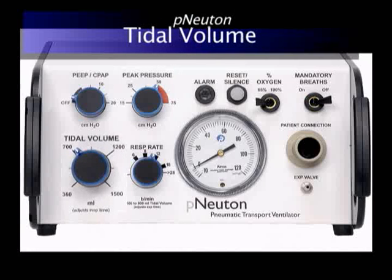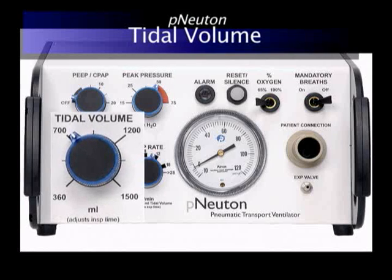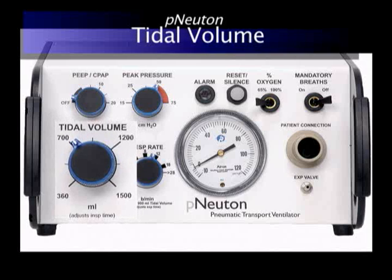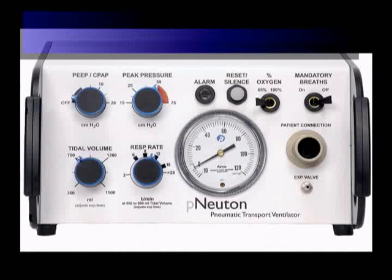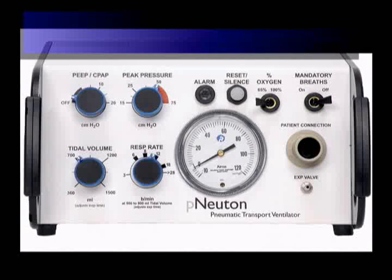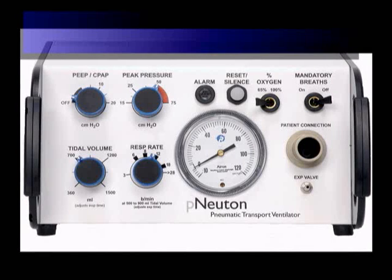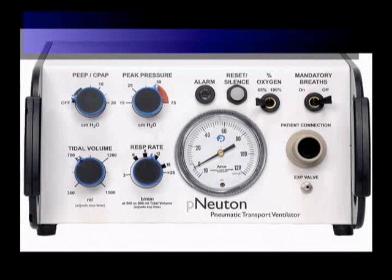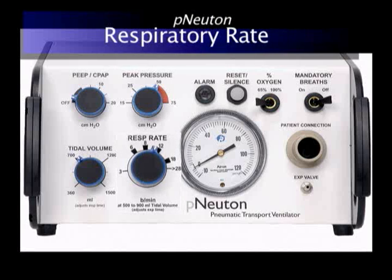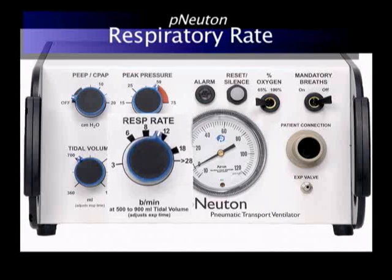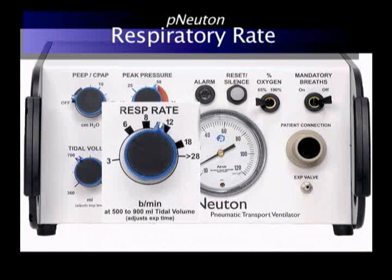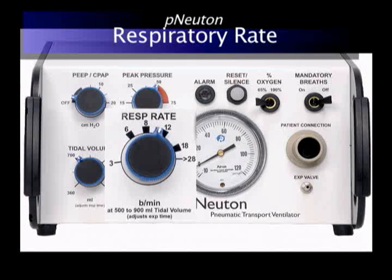Here you see the tidal volume control. It has a range of 360 to 1500 mLs for pediatric and adult patient needs. The Newton uses a preset flow at 36 liters per minute. The tidal volume has been calibrated for patient delivery independent of changes in patient condition.